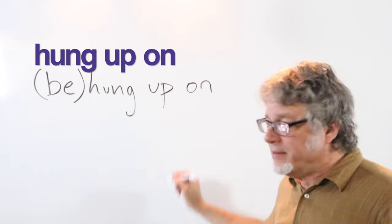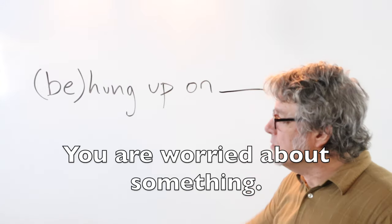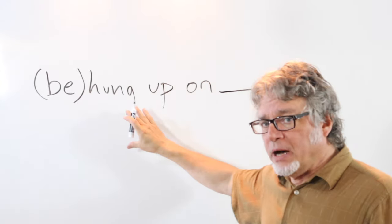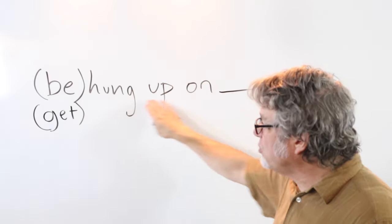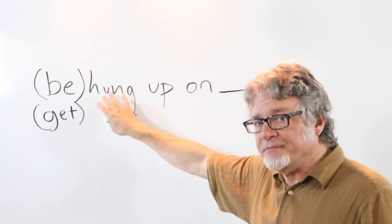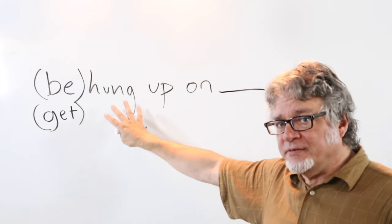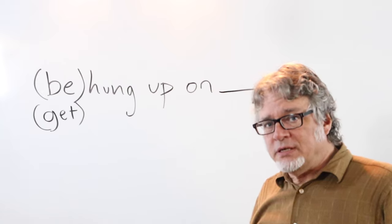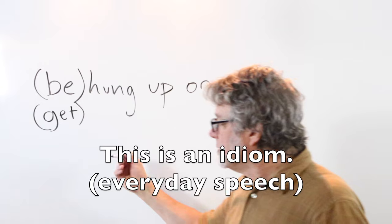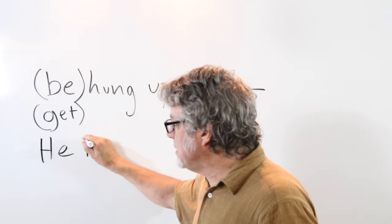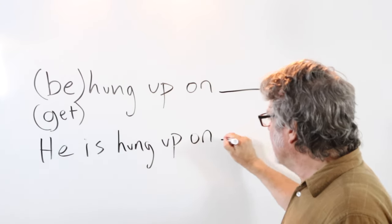When you are worried about something, notice that the verb 'be' is often used with 'hung up on.' You can also use the verb 'get.' The past participle here is acting as an adjective phrase — or you can call it an idiom, which might be easier. If you just say this is an idiom: he is — there's the verb 'be' — hung up on.